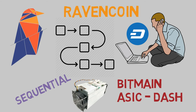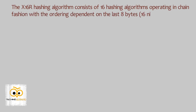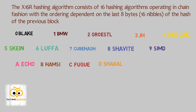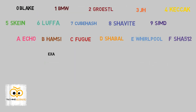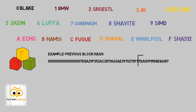Let's now understand how the X16R hashing algorithm works. It consists of 16 hashing algorithms operating in a chain fashion, with the ordering dependent on the last 8 bytes — that is, 16 nibbles — of the hash of the previous block. The last 16 digits of the previous block hash are taken, and accordingly the algorithm sequence is defined.